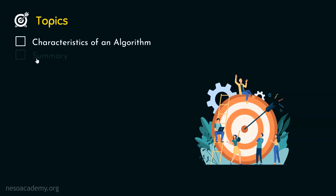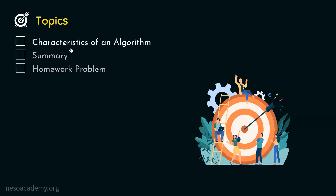We will first understand some characteristics of an algorithm. Then I will give you the summary of this entire lecture, so that you can see all the characteristics in the same place. Finally, I will give you the homework problem of this lecture, which you need to solve on your own after completion. So let's start with the characteristics of an algorithm.